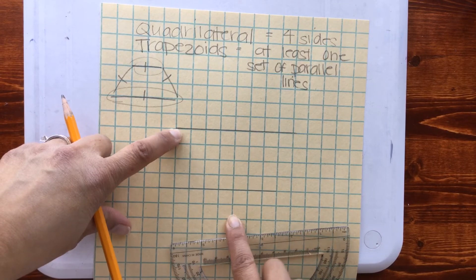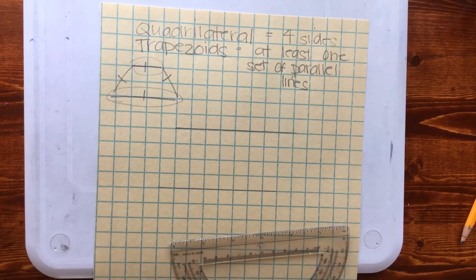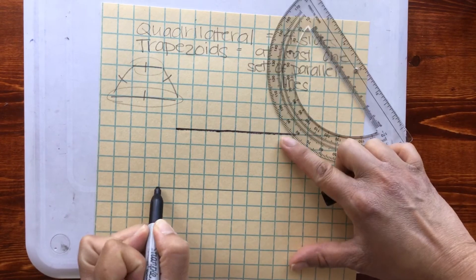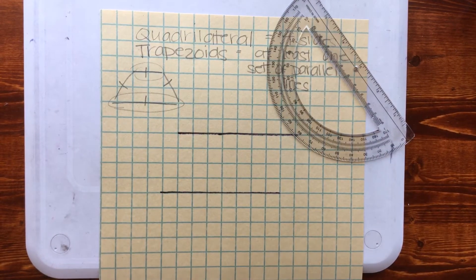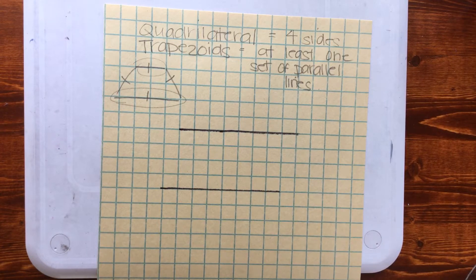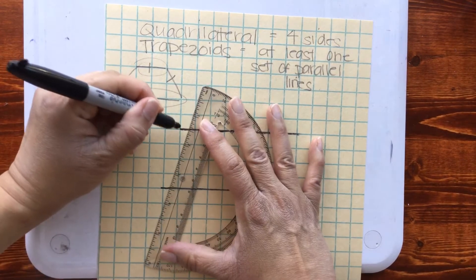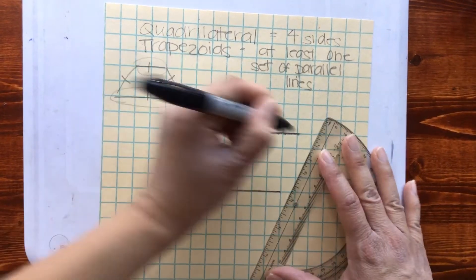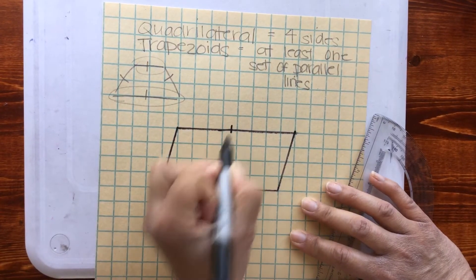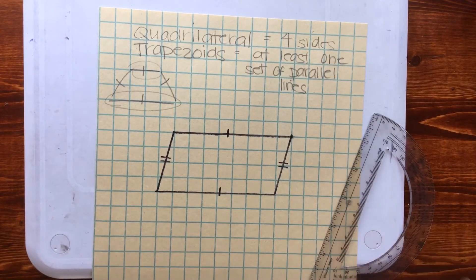I have drawn two parallel lines. In order to make my trapezoid into a parallelogram, I need to draw another set of parallel lines, because to be considered a parallelogram you have to have two sets of parallel lines. So now I have this set of parallel lines and this set of parallel lines — I have now drawn a parallelogram.